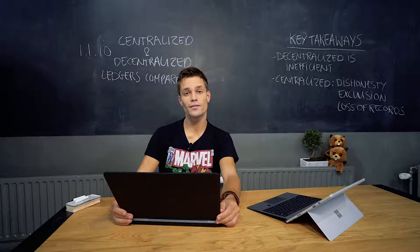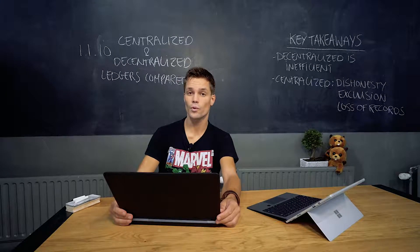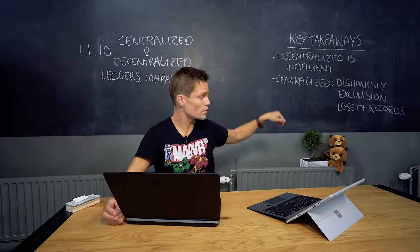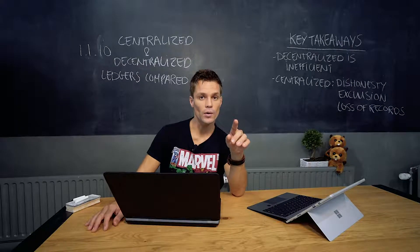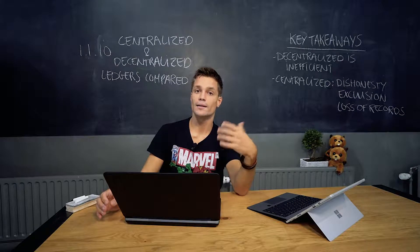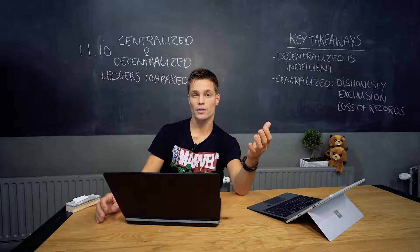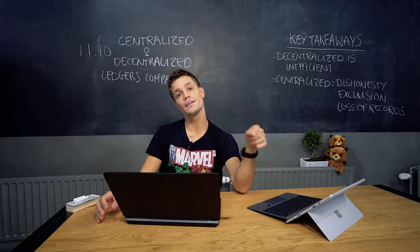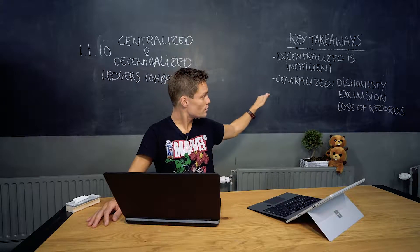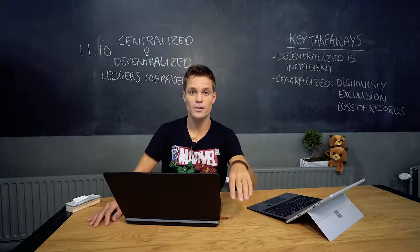We now know what a distributed decentralized ledger is. Centralized ledgers are controlled by trusted third parties and have three risks: dishonesty, exclusion, and loss of records. They also create walls in closed-off environments, whereas a decentralized distributed ledger does not. The key takeaway is that decentralized is inefficient, while centralized has three main risk categories.